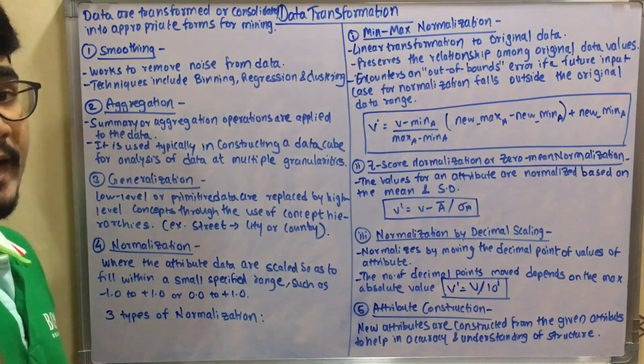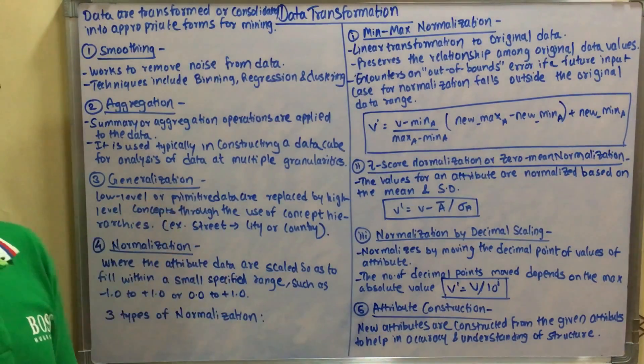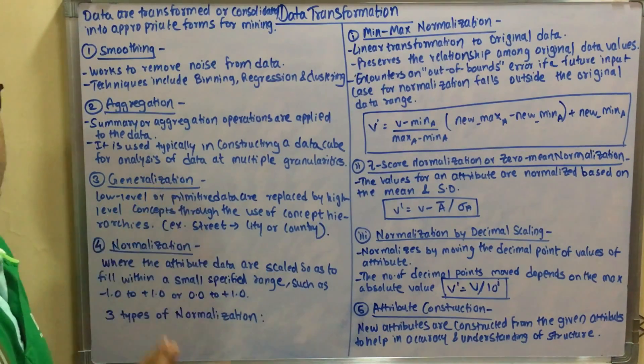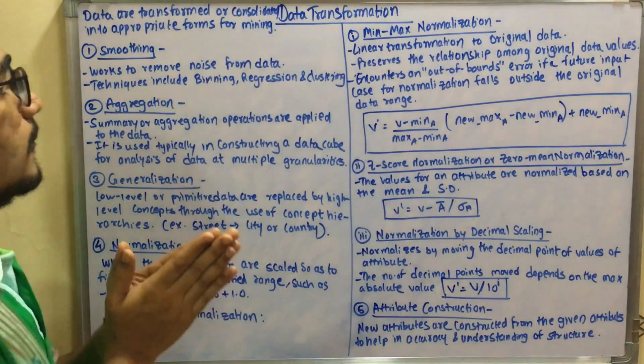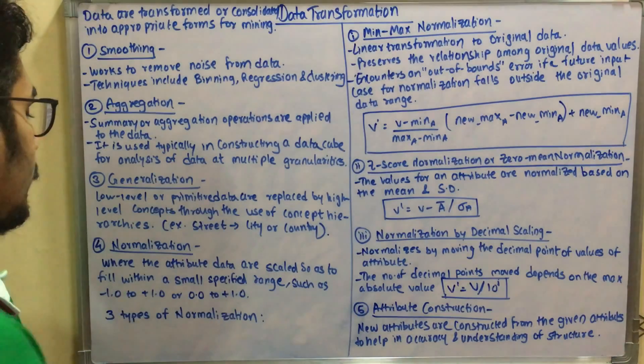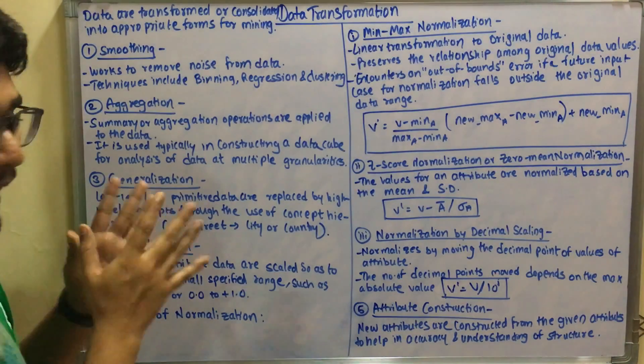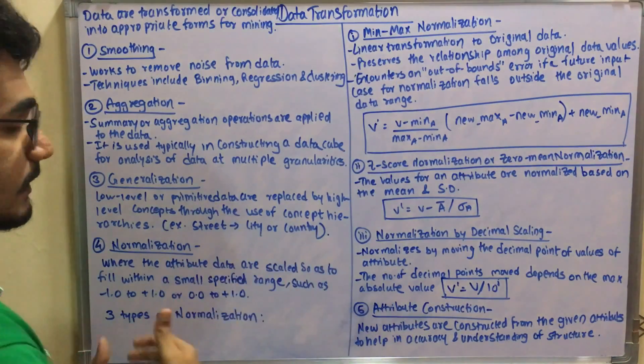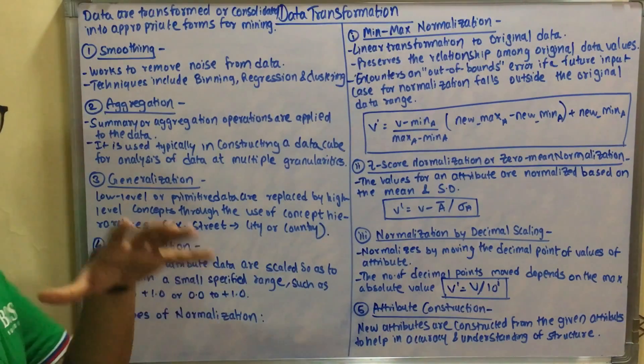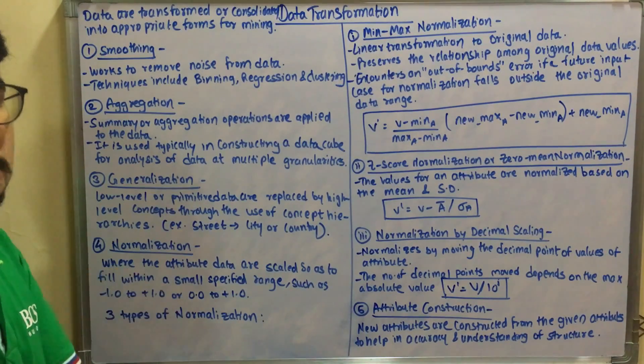Next you have the normalization technique, which is the most important data transformation in data mining. In normalization, the attribute data are scaled up or scaled low so as to fit within a particular small specified range.